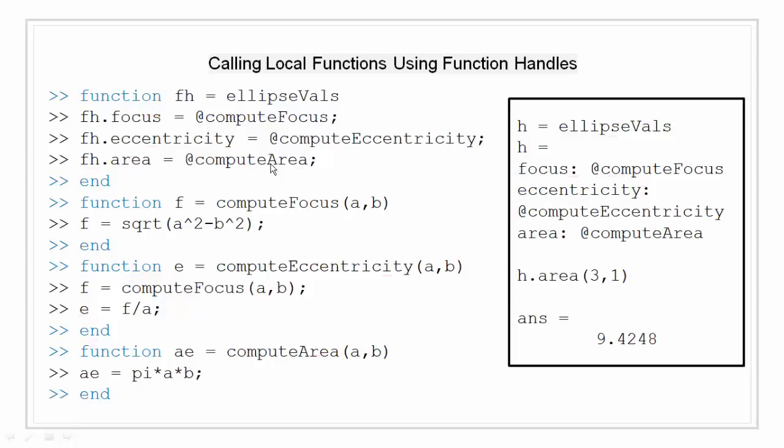So how to use this implementation is shown in the box on the right. We have variable h that calls the main ellipseVals function that now becomes a structure with field name focus, eccentricity and area having handled to its own functions. We can call the appropriate function by referring to the field name as done for area. So we have h.area and passing the input arguments.